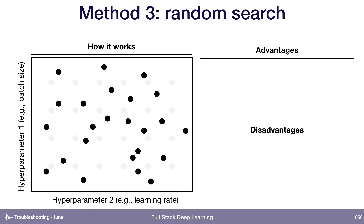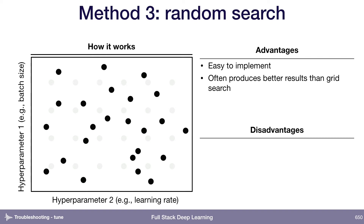The next method is random search. You select ranges for all your hyperparameters but instead of grid points, you sample some number of points randomly from within that range. This is also really easy to implement and tends to produce better results than grid search. But one challenge is that it's not very interpretable — you get some learning rate that's just a random number, and it kind of feels messy.